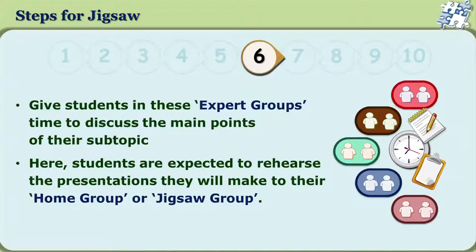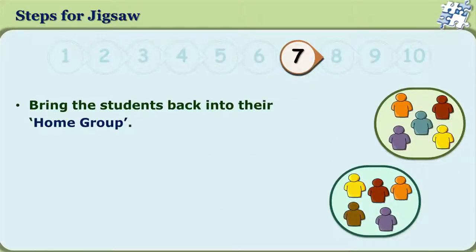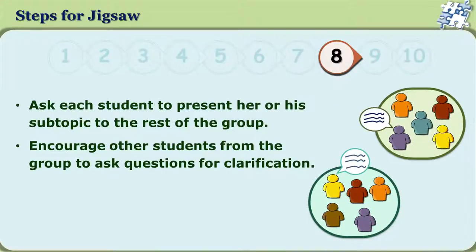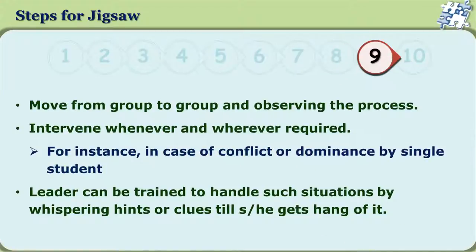Every member of the expert group has the responsibility of ensuring the learning of every member of the home group. At step seven, the students come back to their home group from the expert group. At step eight, every student then presents his or her subtopic to the rest of the group. This encourages other students from the group to ask questions for clarification. At this junction, the individual doing the presentation can also refer back to the other members of the expert group for any further clarification. At step nine, the teacher moves from group to group observing the process and intervenes whenever and wherever required.